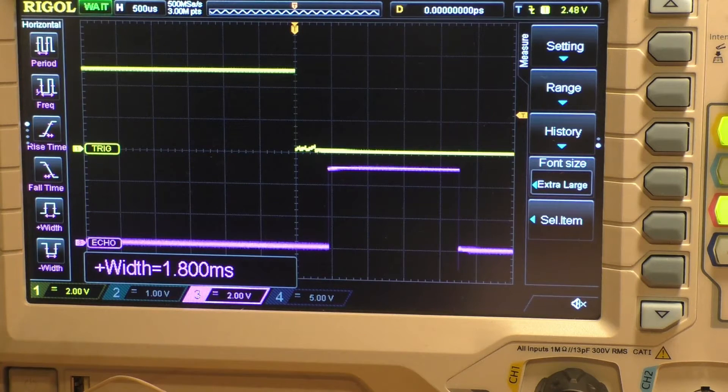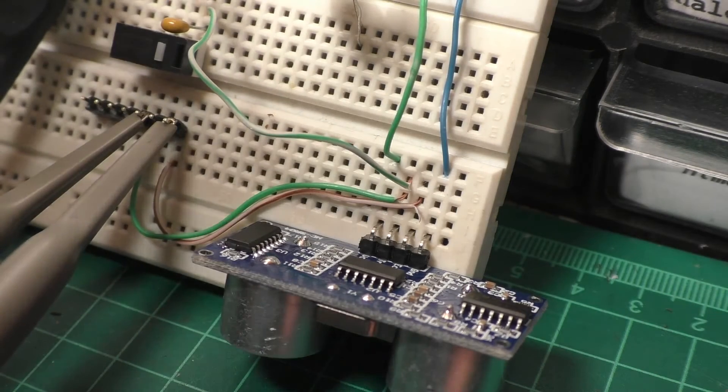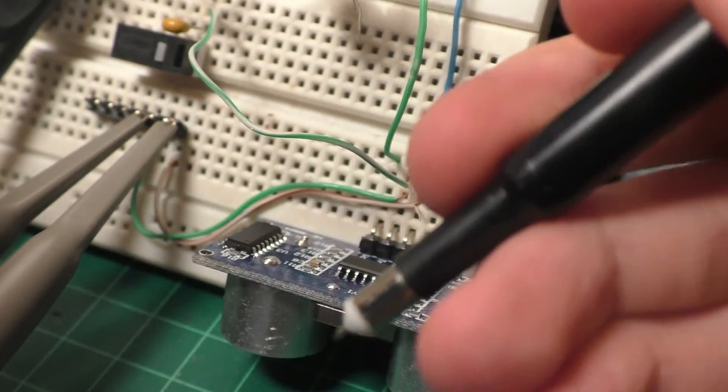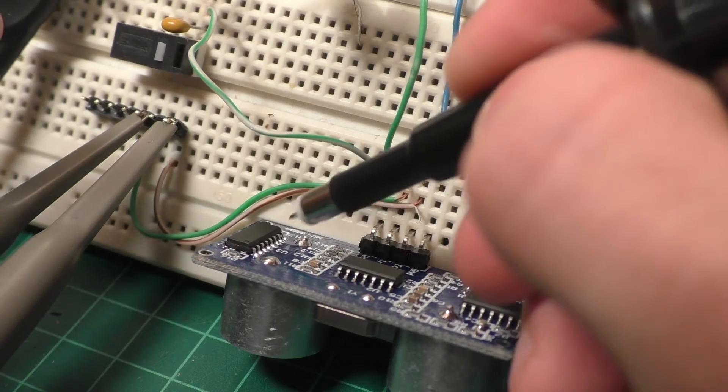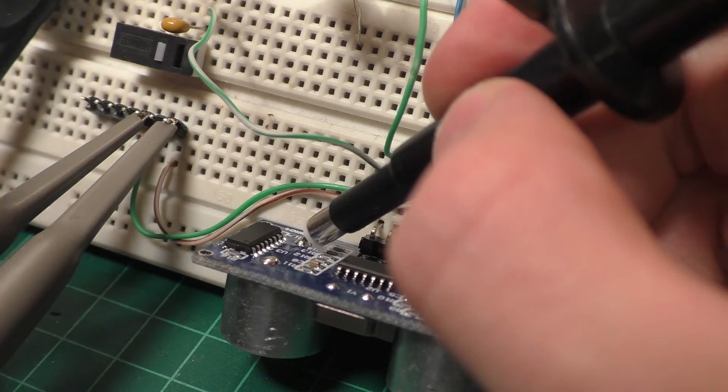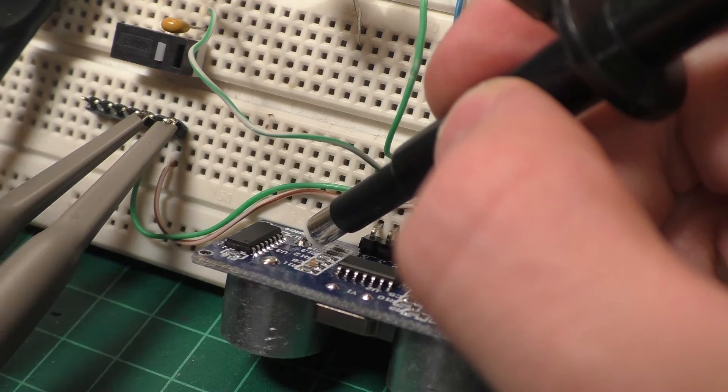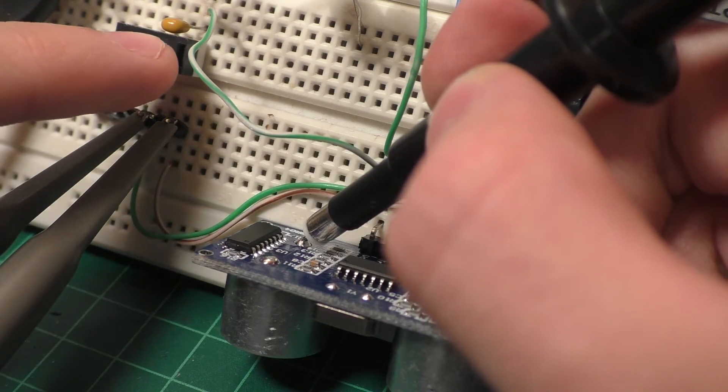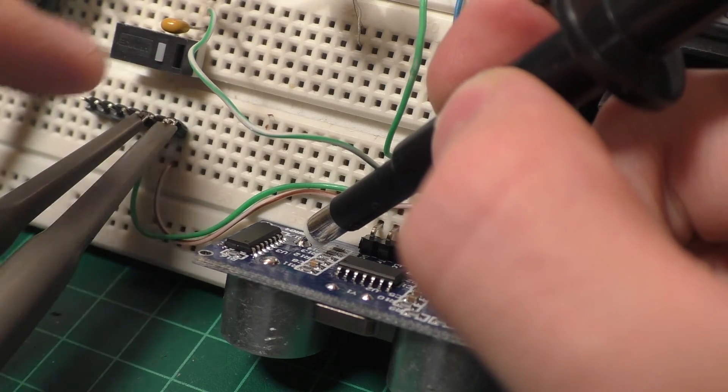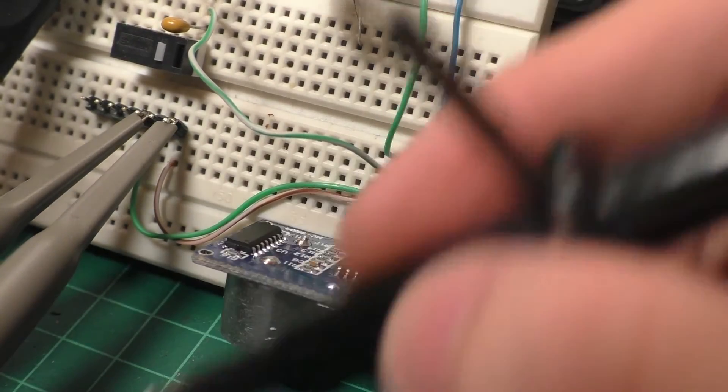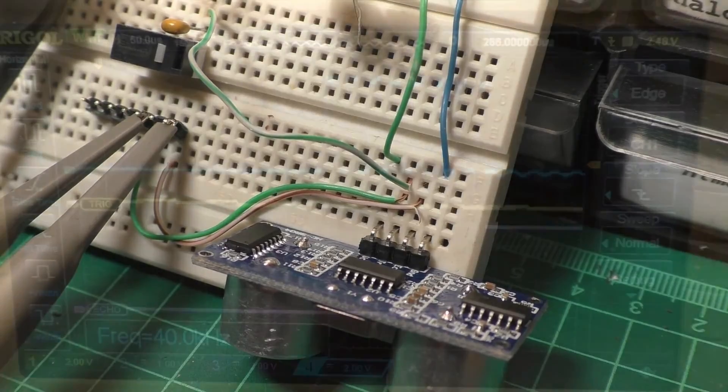One last thing we are going to measure is the frequency the sensor operates with. In order to do that we need to probe the transmission transducer at its positive pin and take a quick look at the oscilloscope. So let's trigger the sensor and we have a nice and clear waveform on the oscilloscope. And there are a couple of things we can see when we add the third waveform, the transducer input.